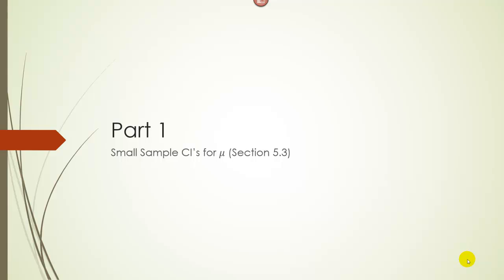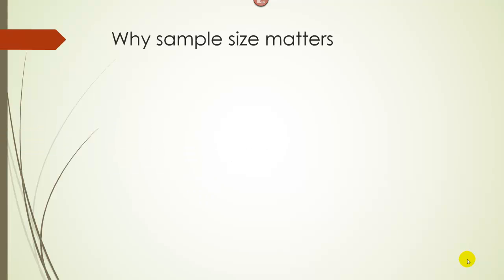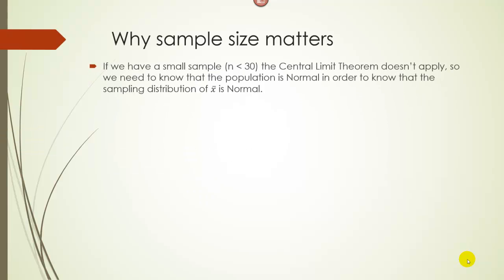We already explored confidence intervals when we have a large sample, but what happens if we want to do a confidence interval for the population mean when we have a small sample, or less than 30? So why does sample size actually matter? If we have a small sample — which in this class we define as less than 30 — the central limit theorem doesn't apply.